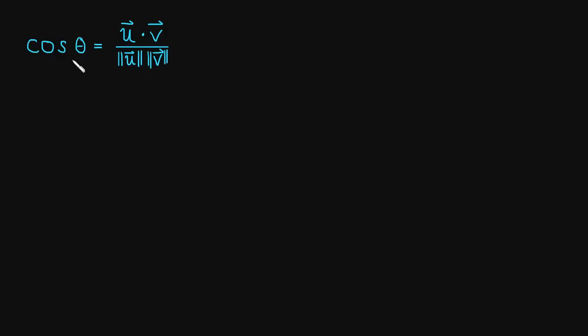In the last video we learned the definition of the cosine between two vectors. In fact, we pretty much derived this. So we said the cosine of the angle between two vectors is u dot v divided by the length of u times the length of v.